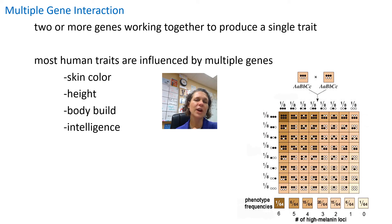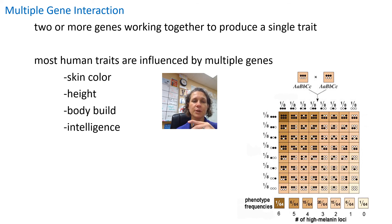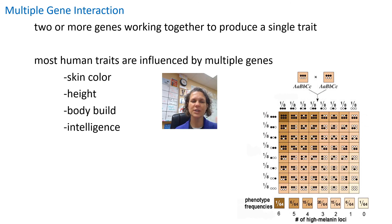Multiple gene interaction is very common and we see it in a lot of our different physical traits. This is when two or more genes actually work together for a single trait. In humans, most physical traits are influenced by multiple genes — skin color, which is what that picture shows with all the different skin tones, height, body build, and intelligence are all examples. This is one of the reasons it's hard to predict exactly what a person is going to look like based on their parents — multiple genes come into play.